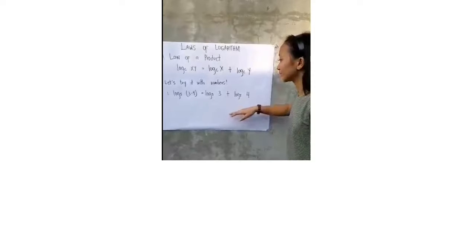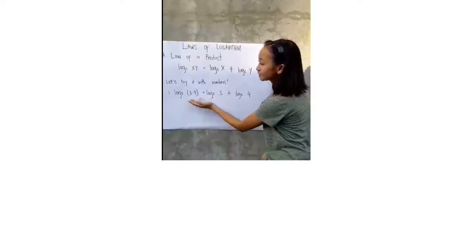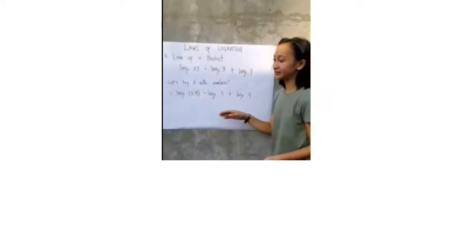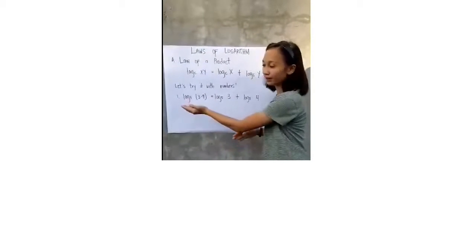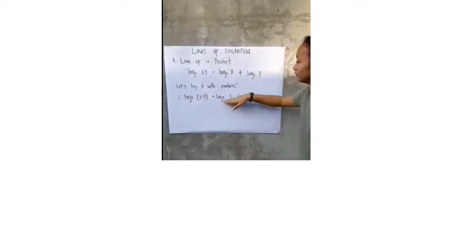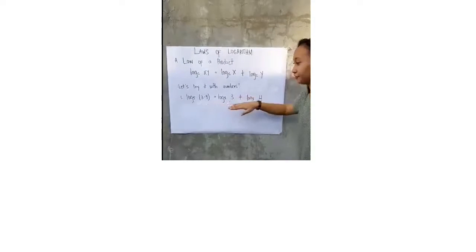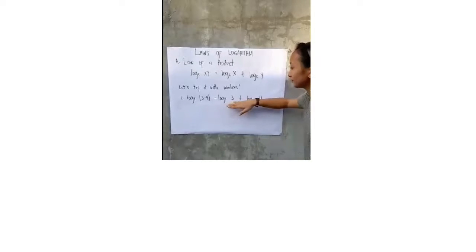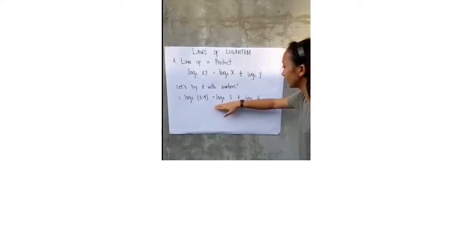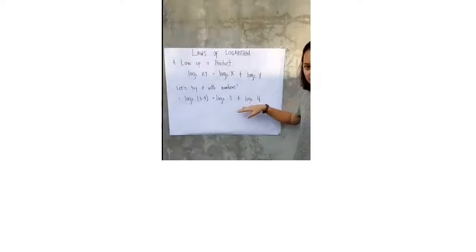Why? Because since the bases are the same — which are logarithm to the base 5 — we just need to separate 3 and 4. So, logarithm of 3 to the base 5 plus logarithm of 4 to the base 5.